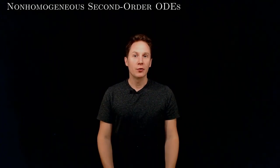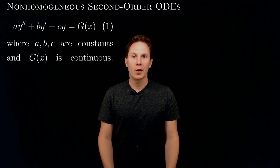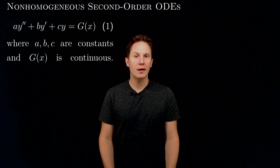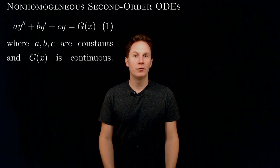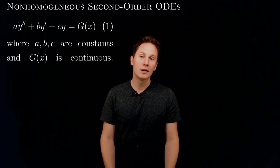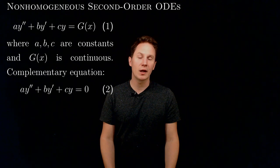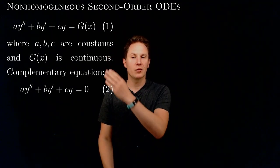Non-homogeneous second-order ODEs are of the form a times y double prime plus b times y prime plus c times y equals g of x, where a, b, c are constants and g of x is a continuous function. We can solve these non-homogeneous second-order ODEs by first setting up the complementary equation, which is obtained by setting the right-hand side to zero.